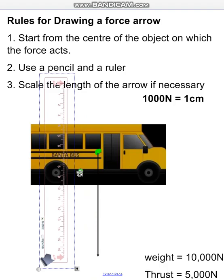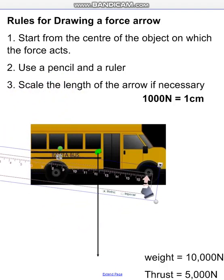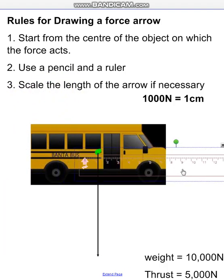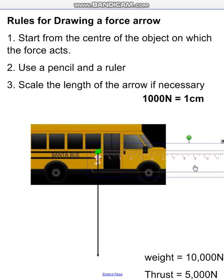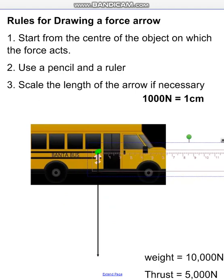Finally we have a thrust of five thousand newtons. We take our ruler and line it up properly, and we draw an arrow five centimetres. You need to be accurate to a millimetre, the resolution of your measuring apparatus for the purposes of the exam.